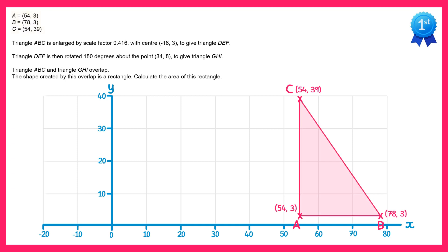We're told this triangle is enlarged by scale factor 0.416 recurring with a centre of negative 18, 3. 0.416 recurring, if you convert it into a fraction, is 5 twelfths. Let's also mark on the centre negative 18, 3 and call that point O.